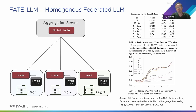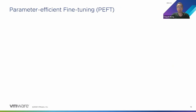On the other hand, for fine-tuning large language models, the commonly used method is parameter-efficient fine-tuning, or PEFT. The core idea of PEFT is that during the training process, we do not adjust all of the model's parameters, but instead introduce a small number of new parameters and only update these parameters during training.